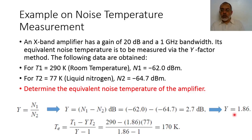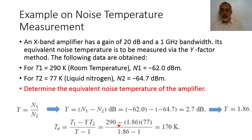We have obtained Y equals 1.86. From this value we can calculate the equivalent noise temperature of the amplifier using Te = (T1 − Y·T2) / (Y − 1). With T1 equal to 290 Kelvin, T2 equal to 77 Kelvin, and Y equal to 1.86, we obtain Te equals 170 Kelvin. This is the equivalent noise temperature of the amplifier.